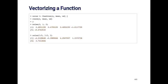Here's another simple function that generates random normal noise. The function has three arguments: the number of observations, the value of the mean, and the value of the standard deviation. If I apply noise with a single set of arguments — 5, 1, and 2 — I get five random normal variables with mean 1 and standard deviation 2.